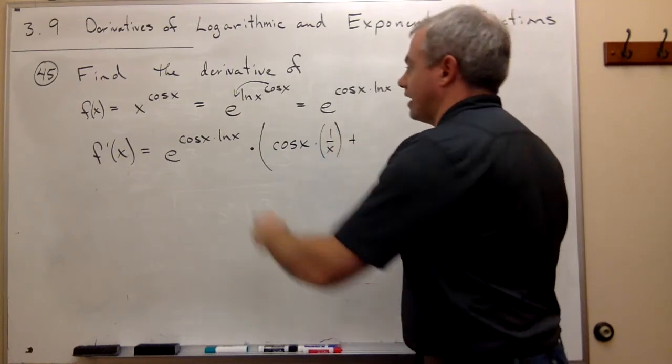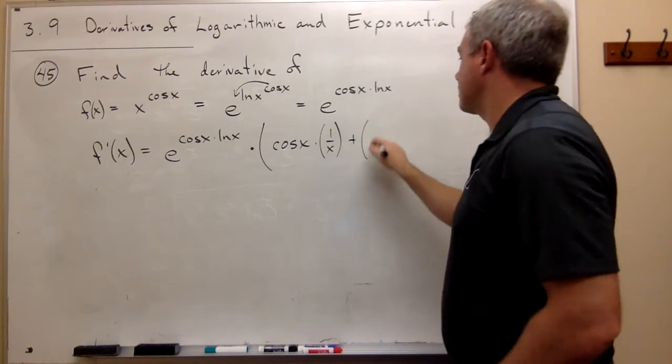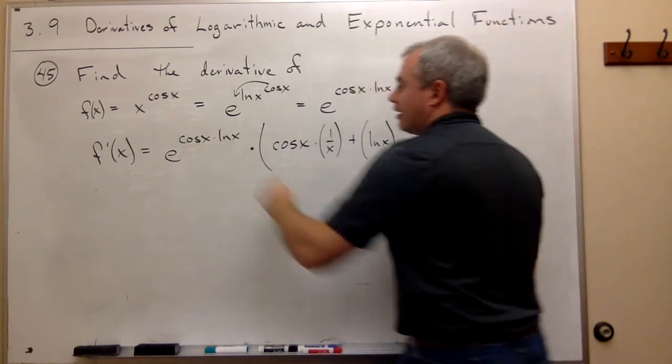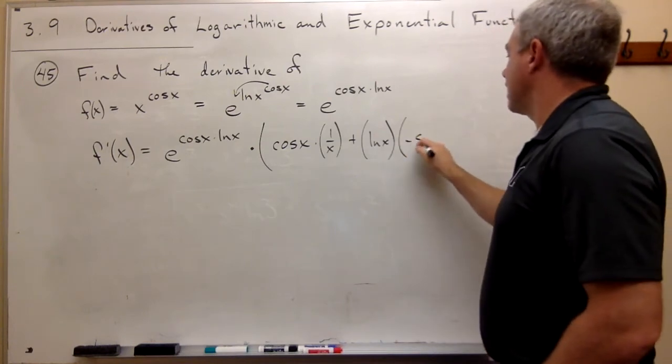plus the second, which is ln of x, times the derivative of the first guy, which is negative sine of x.